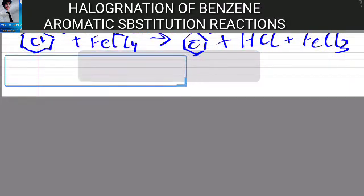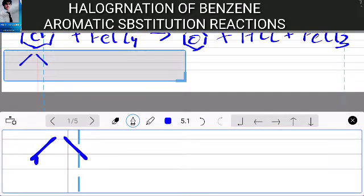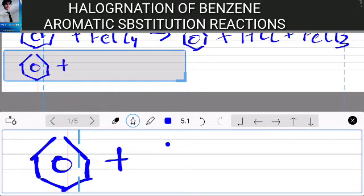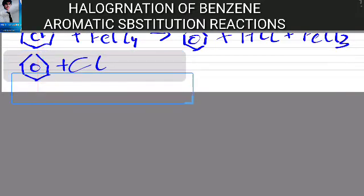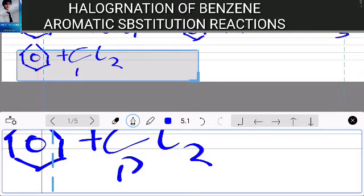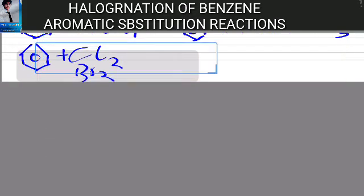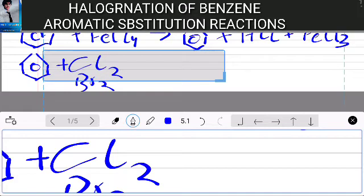If we react benzene ring directly with Cl2 and Br2, no reaction will occur. Cl2, Br2, and so on, no reaction occurs. But the reaction occurs when a catalyst is present or photochemical radiations are present.